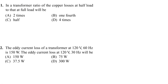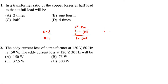Problem number 1: In a transformer, the ratio of the copper losses at half load to that of full load will be. The copper losses formula is x² into PCU. At half load, x = 1/2 and at full load x = 1. Substituting: (1/2)² × PCU divided by 1 × PCU gives a ratio of 1/4. Option B is correct.